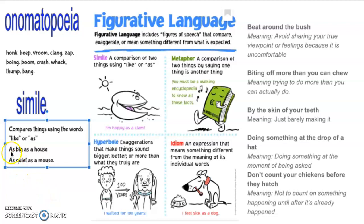For example, 'as big as a house.' The balloon was as big as a house. Well, the balloon probably wasn't as big as a house, but it helps you get this mental image of a very, very big balloon. 'As quiet as a mouse' — in your mind, you can imagine this person who is super quiet, just like a mouse scampering across the floor. You can barely hear them, and it gives you that mental image.